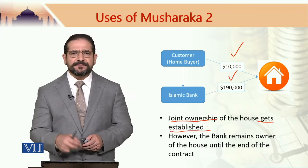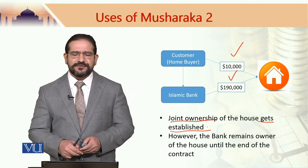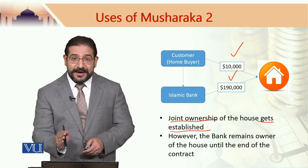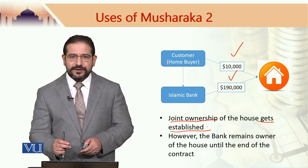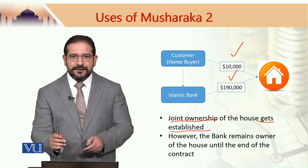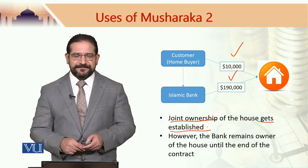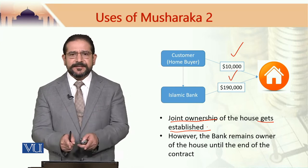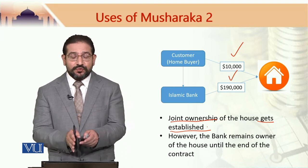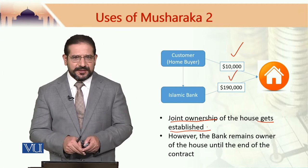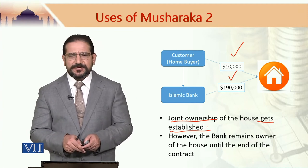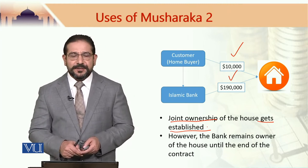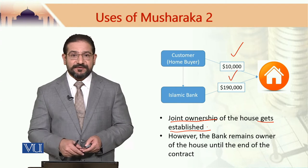At this point, joint ownership of the house gets established. However, for practical purposes, in most home financing products based on Diminishing Musharaka, the bank remains the legal owner of the property for the financing period. From a Sharia viewpoint, right from the beginning, the customer and the bank are joint owners. However, given the limitations in a number of jurisdictions, legally the bank remains owner of the property until the end of the financing period.